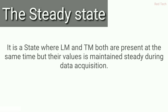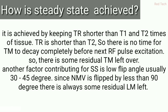A question may arise: how is steady state achieved? Basically, it is achieved by keeping TR shorter than the T1 and T2 times of the tissue. TR is the time of repetition. When TR is shorter than T2, there is no time for the transverse magnetization to fully decay.